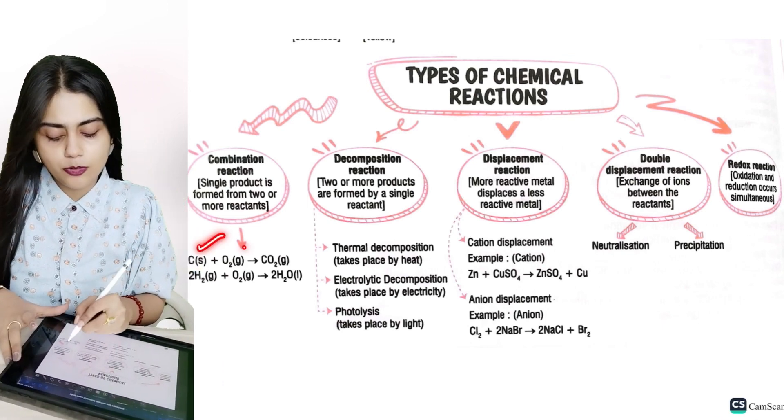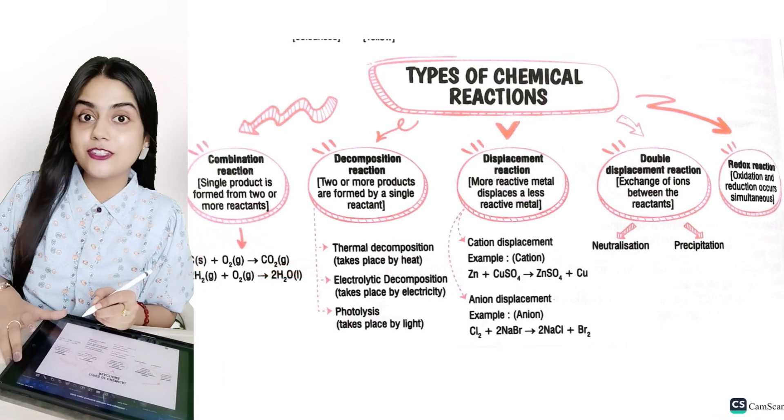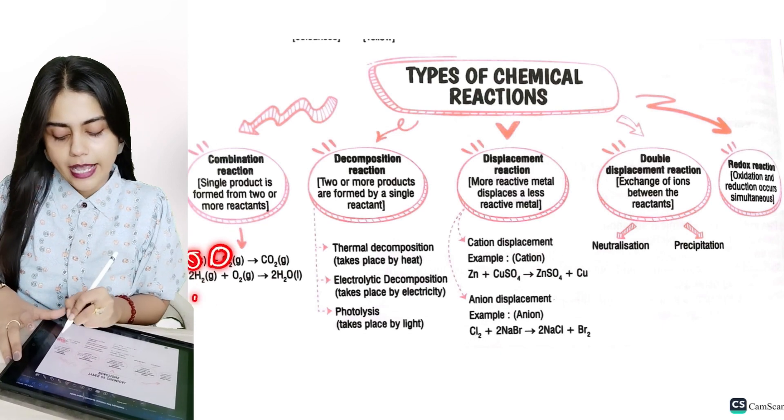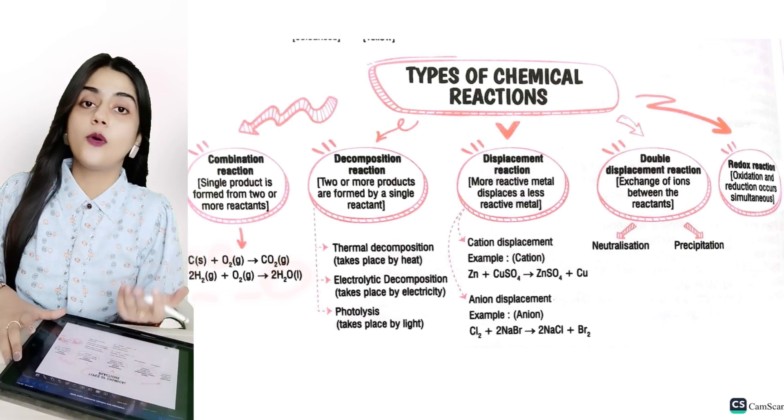For example, C plus O2, it gives CO2. This is combination reaction. Two reactions. H2 plus O2, it gives H2O. This is combination reaction.